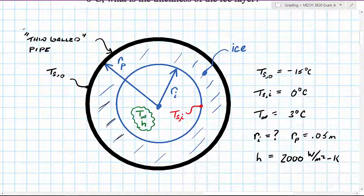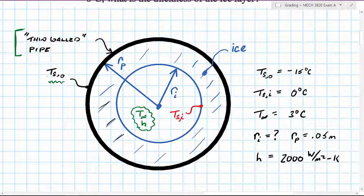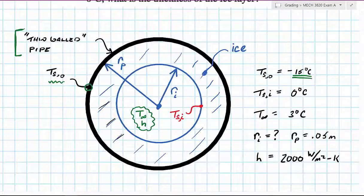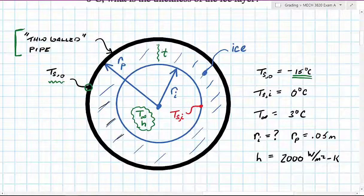We have what they're referring to as a thin-walled pipe. When we mention a thin-walled pipe, we're not going to be concerned about heat transfer through the wall of the pipe. We're told there is a specified surface temperature of the outer layer of the pipe, and we assume the temperature on the inside layer is essentially the same. So in this case, we have an outside pipe wall temperature of minus 15 degrees C. There is liquid water flowing through the pipe, and a layer of ice of unknown thickness has developed on the inside of the pipe.